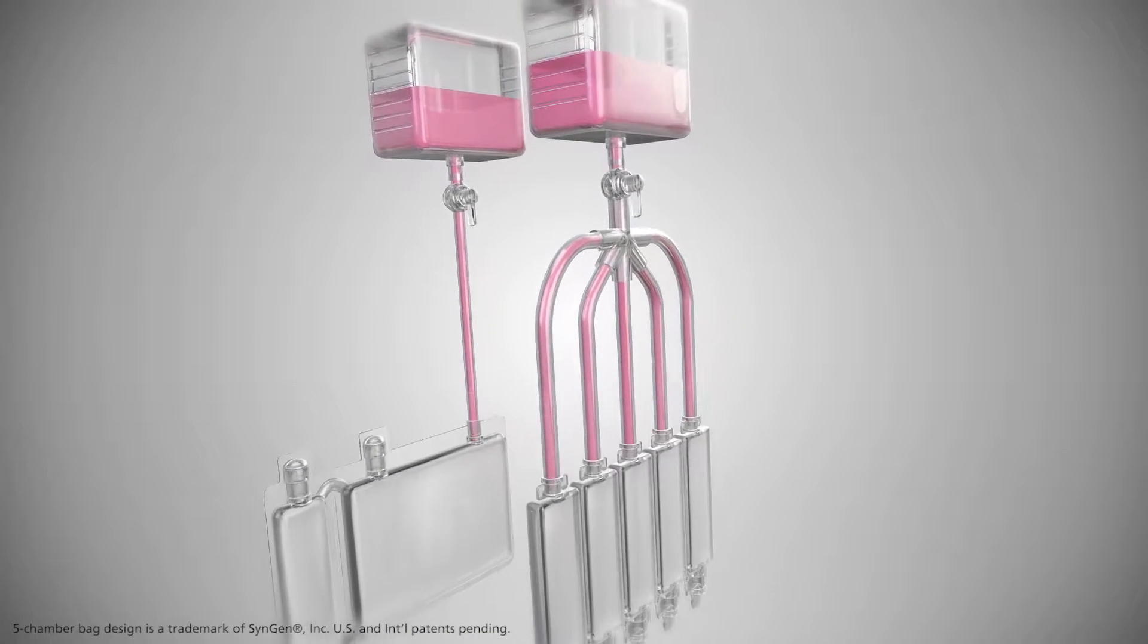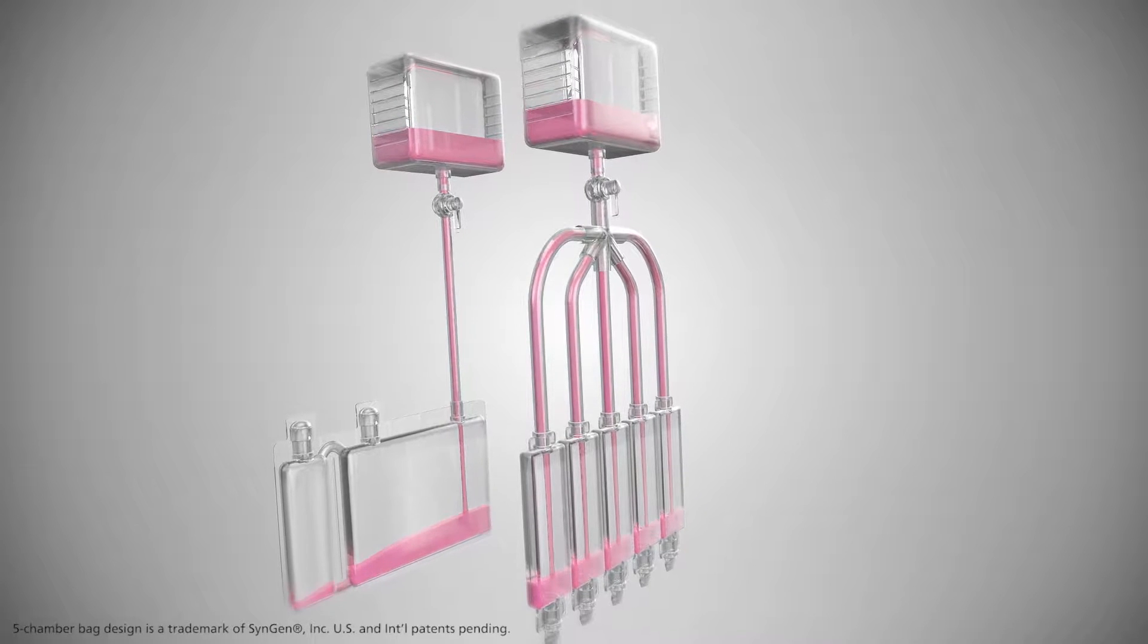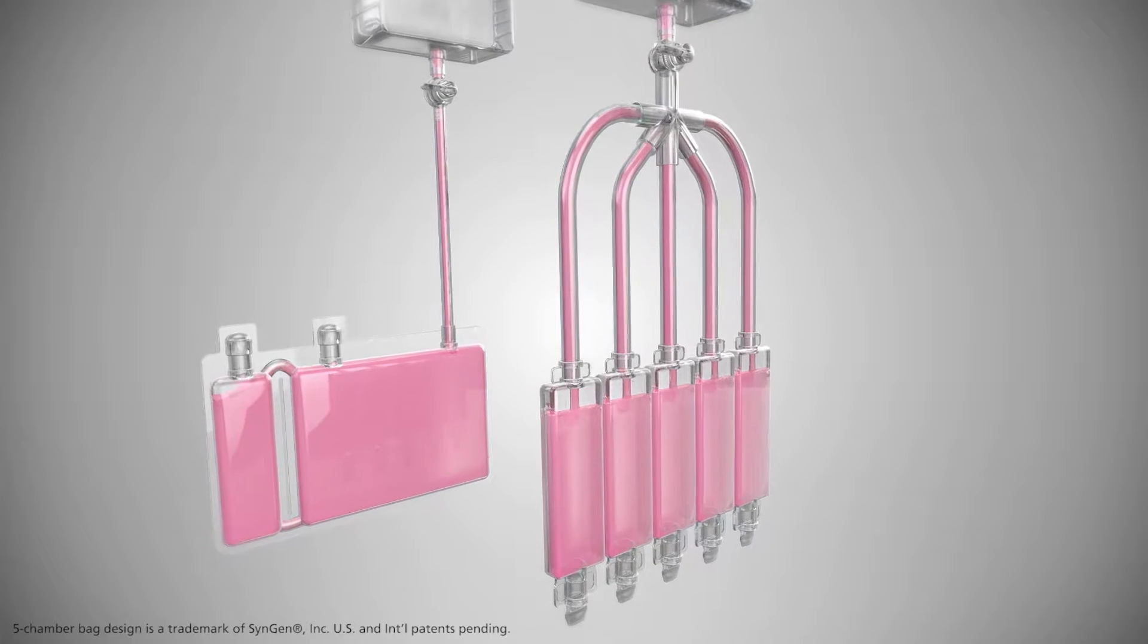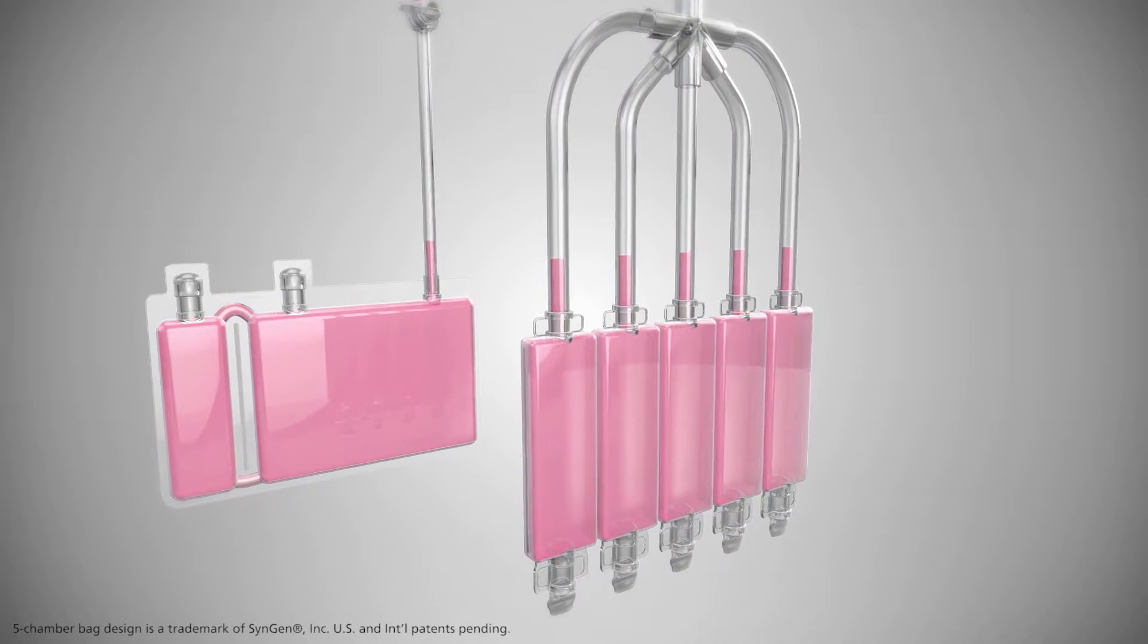Once processing is complete, cord blood is transferred into a storage bag for cryopreservation. With the VC5X, cells transfer evenly into five separate compartments, storing 20% in each compartment.